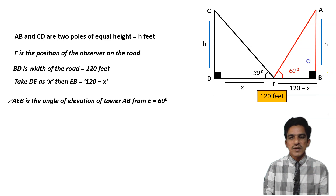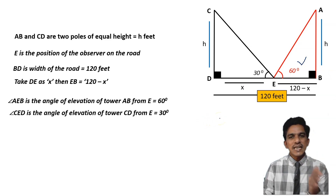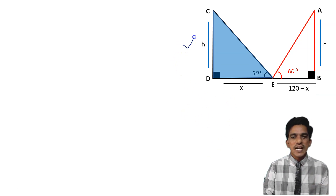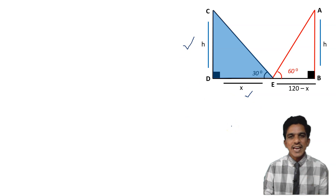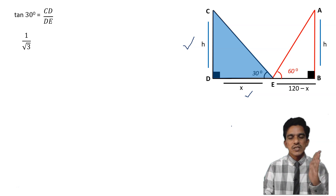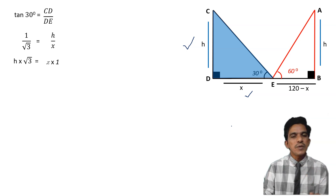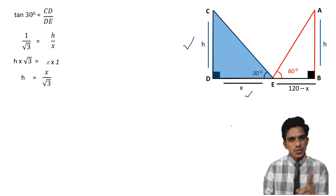Angle AEB is the angle of elevation of the tower AB from point E. Similarly, angle CED is the angle of elevation of the tower CD from the same point E, that is equal to 30 degrees. Now let us consider triangle CDE first. The angle is 30 degrees, the opposite side is H and the adjacent side is X. So tan 30 is opposite by adjacent, CD by DE. We know that tan 30 is 1 by root 3, so 1 by root 3 equals H by X. Cross multiplying, H into root 3 equals X, or H equals X by root 3. Take this as equation 1.